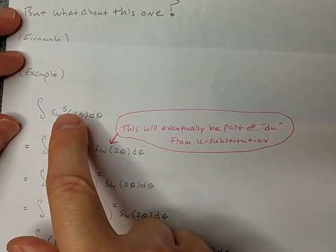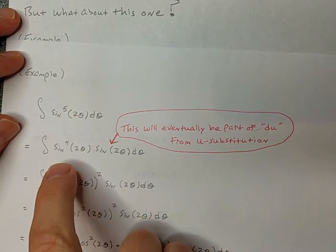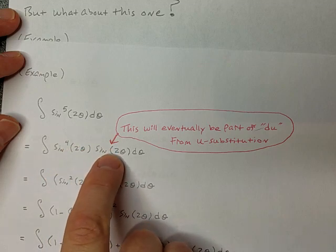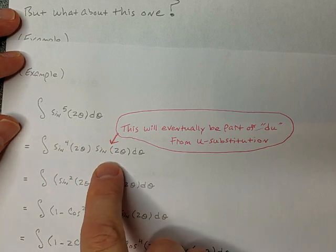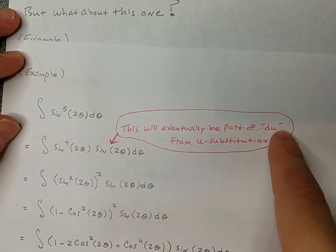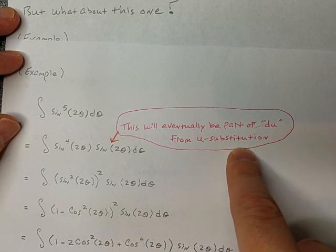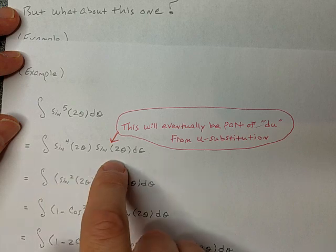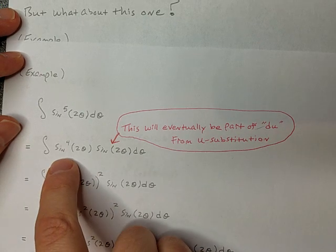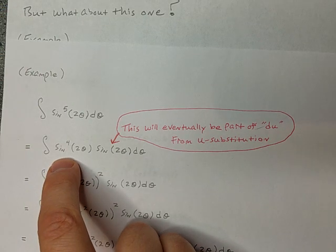So we borrow one away from that, and we get a four and a one, and this eventually becomes the du part of an eventual u substitution. But in order for that to be du, the u would have to be some manner of cosine, right?